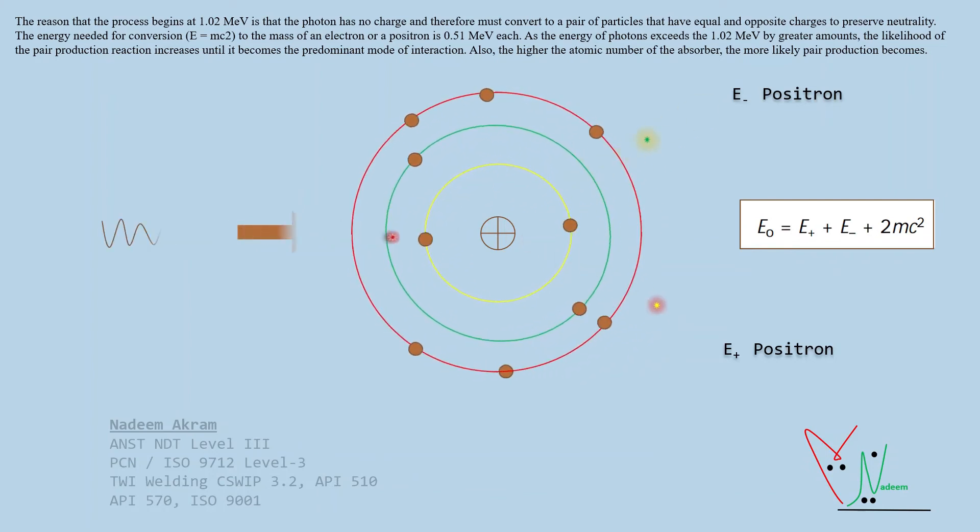Also, the higher the atomic number of the absorber, the more likely pair production becomes.